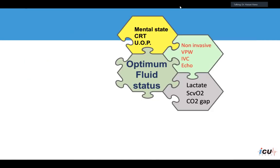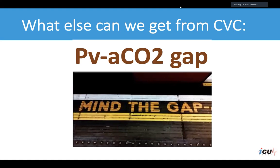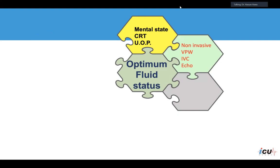The central venous oxygen saturation came back at 72%. Had it come back at 60, that would suggest low cardiac output state requiring inotropes. With a normal ScvO2, there is less actionable information. Having both a central line and an arterial line allows measurement of the venoarterial CO2 gap, which indicates a low flow state — and when associated with low ScvO2, the patient would benefit from inotropes.